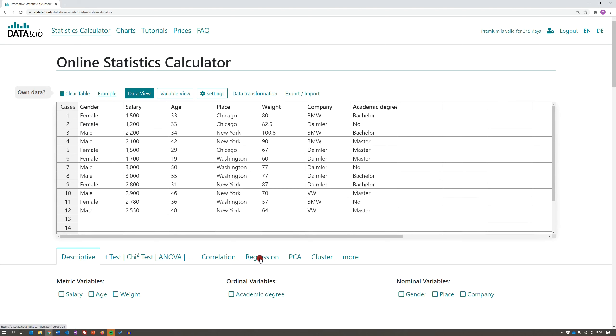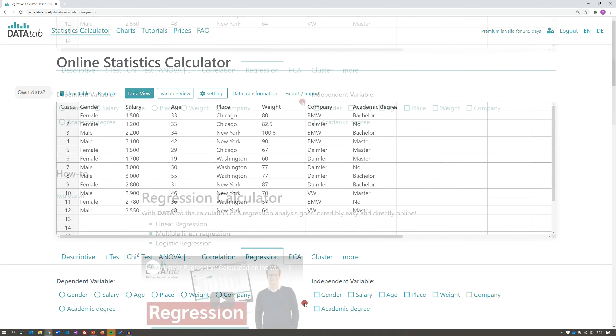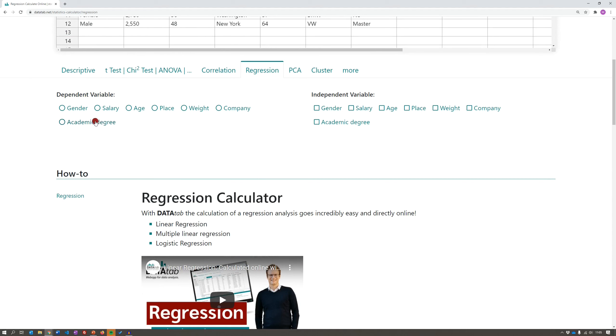So we want to perform a regression, that's why we open the tab Regression. On the left side, you can choose your dependent variable. If you want to perform a logistic regression, you have to choose a categorical variable. This could be gender, place of residence, company, academic degree. On the right side, you can choose your independent variables. Once you chose your variables, the results of the logistic regression will automatically appear here below. Thanks for watching and bye.